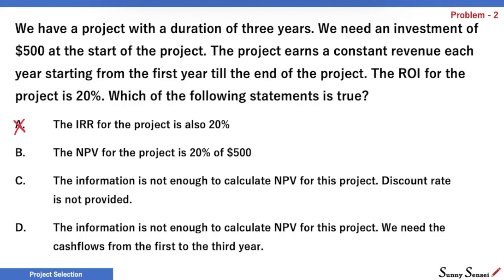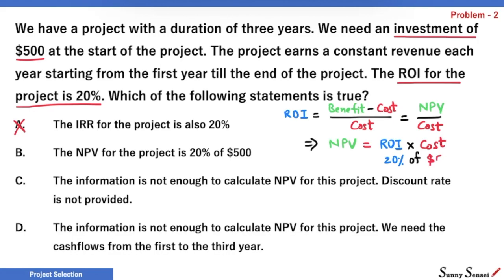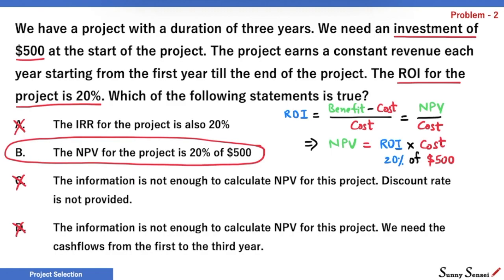Choices B, C, and D all involve NPV. We have just two data points: an initial investment of $500 and an ROI of 20%. ROI is benefit minus cost divided by cost. Benefit is the present value of all project gains, so benefit minus cost is the NPV of the project. Therefore, NPV equals ROI multiplied by cost. The only cost for this project is $500 at time 0, so its present value is also $500. Therefore, NPV is 20% of $500. Choices C and D are incorrect — our answer is B.